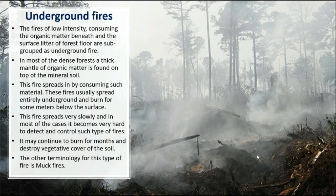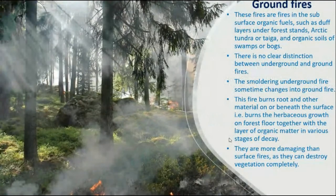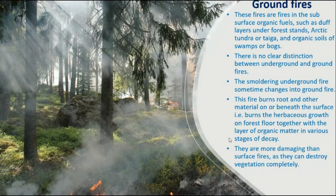Another type is ground fire — fires in subsurface organic material like dark layers in arctic tundra and taiga, organic soils, swamps, and bogs. There is no clear distinction between underground and ground fire, but smoldering underground fires sometimes change into ground fires, with flames coming from the sub-surface. They are more damaging than surface fires, as they can destroy vegetation completely.